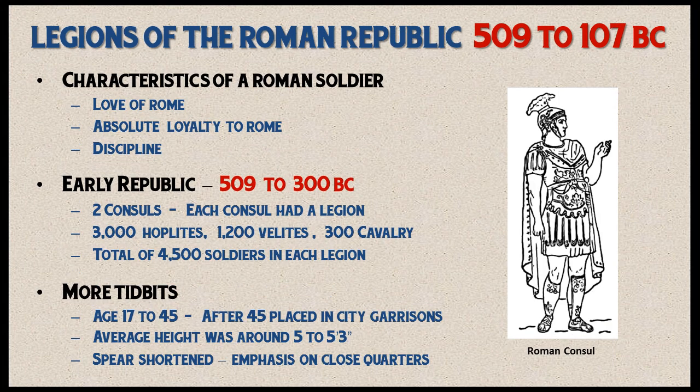Now let's move on to the legions of the Roman Republic — specifically the early to mid-Roman Republic, as the late Roman Republic will be covered in the next video. The characteristics of a Roman soldier during the Roman Republic — and these attributes were probably also present during the Regal period — involved a love of Rome and absolute loyalty to Rome. All individual aspirations were suppressed in favor of the Roman state, so no matter what the situation, Roman soldiers and generals always stayed loyal to Rome. This is a little different than the Greek generals.